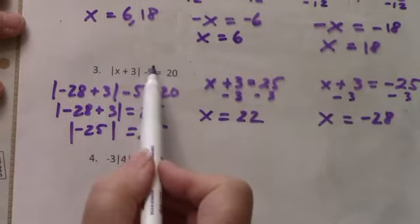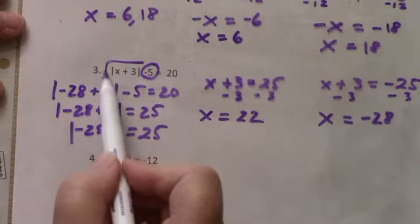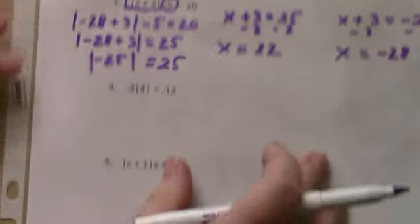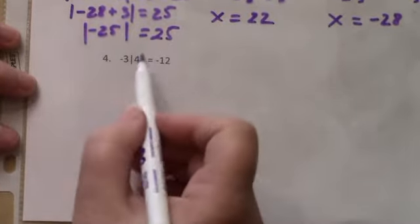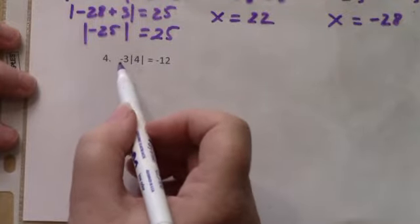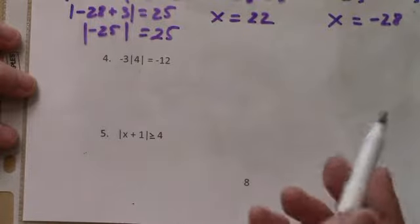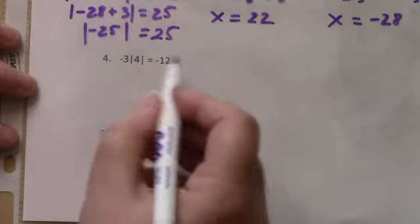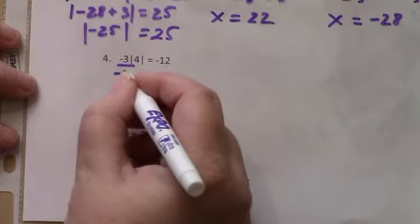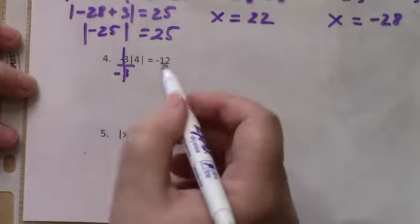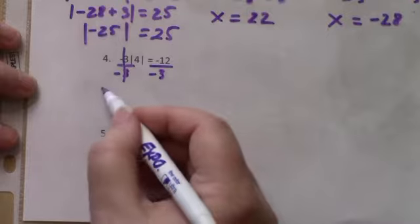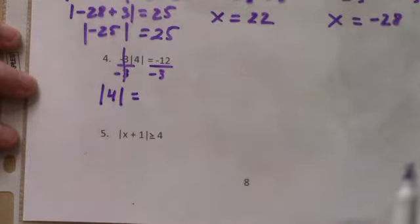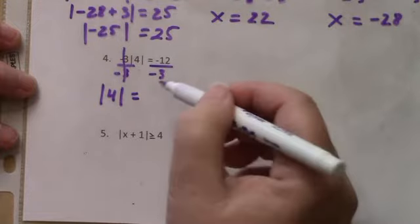Problem 4 has the absolute value being multiplied by negative 3. To isolate the absolute value, we divide both sides by negative 3, which cancels the multiplication. We get the absolute value of 4 equals negative 12 divided by negative 3, which is positive 4. This example shows how you treat an absolute value with something multiplied in front of it — simplify it just like a regular problem.